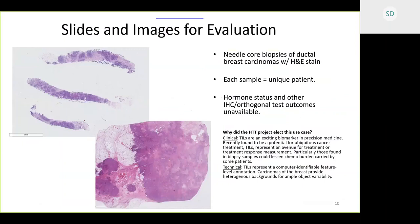The slides and images for evaluation in this study are all needle core biopsies of ductal breast carcinomas, all stained with H&E. Each sample is coming from a different patient, and we are not sharing hormone status or other orthogonal test outcomes with participants. The HTT project elected this use case for several reasons that we can discuss later.